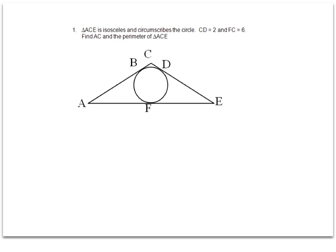This word circumscribes might be new. All that means is that triangle ACE is on the outside of the circle and it creates these three points of tangency at B, D, and F. It's the same thing as saying that the circle is inscribed in the triangle. Circumscribes is just the point of view from the outside shape.